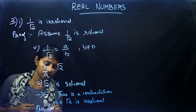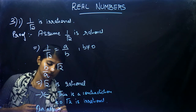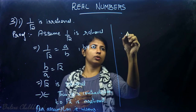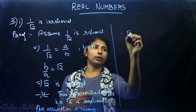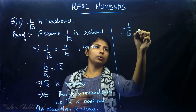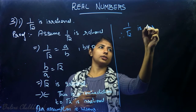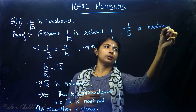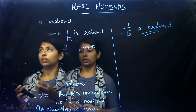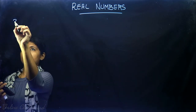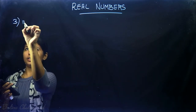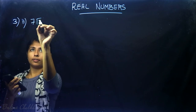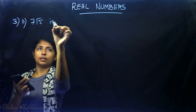Therefore our assumption is wrong, and 1/√2 is irrational. This is the proof — a simple question. Question number 3, second part: prove that 7√5 is irrational.